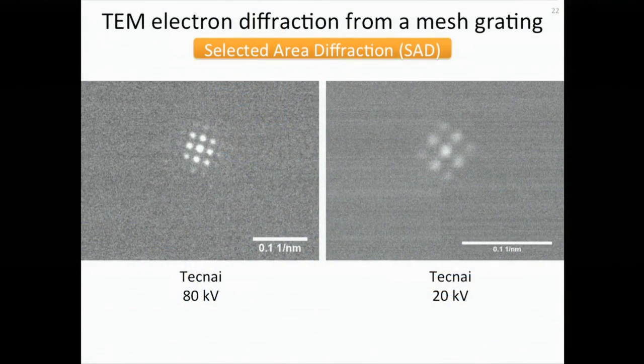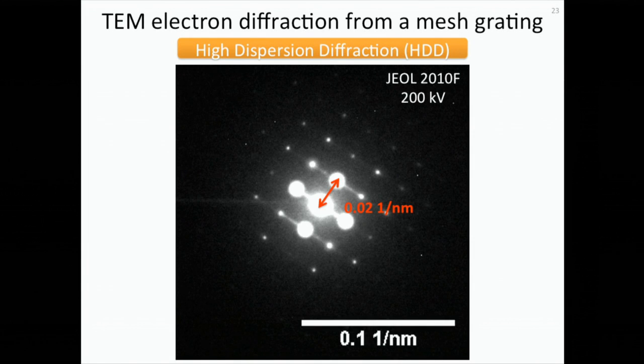Our next step is to characterize this mesh grating. First, we try TEM diffraction in normal diffraction mode, the so-called selective area diffraction in a TEM. The two images are taken by Technai TEM working at different acceleration voltage, 80 kV for the left figure and 200 kV for the right figure. We can observe a square lattice diffraction pattern that corresponds to the square lattice two-dimensional mesh grating. We are also able to do a high resolution diffraction by this high dispersion diffraction mode. In this mode, we get a much higher camera length and much higher magnification on the diffraction. We also measure the distance between the spots in the diffraction pattern, which is 0.02 inverse nanometer, which corresponds to the 50 nanometer pitch of our fabricated mesh grating.